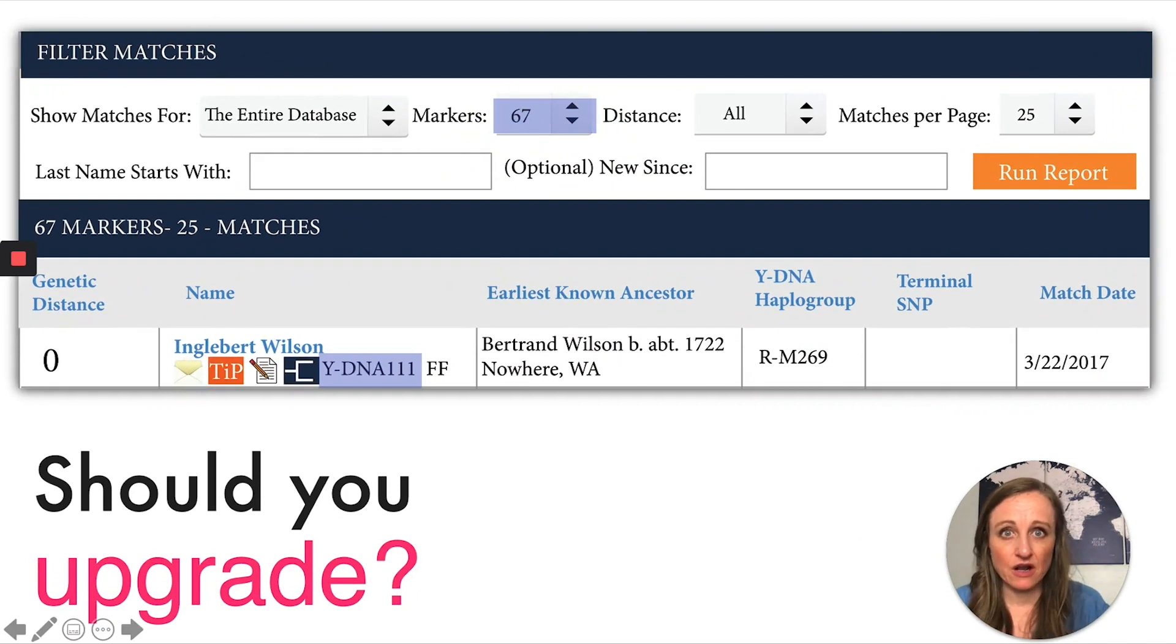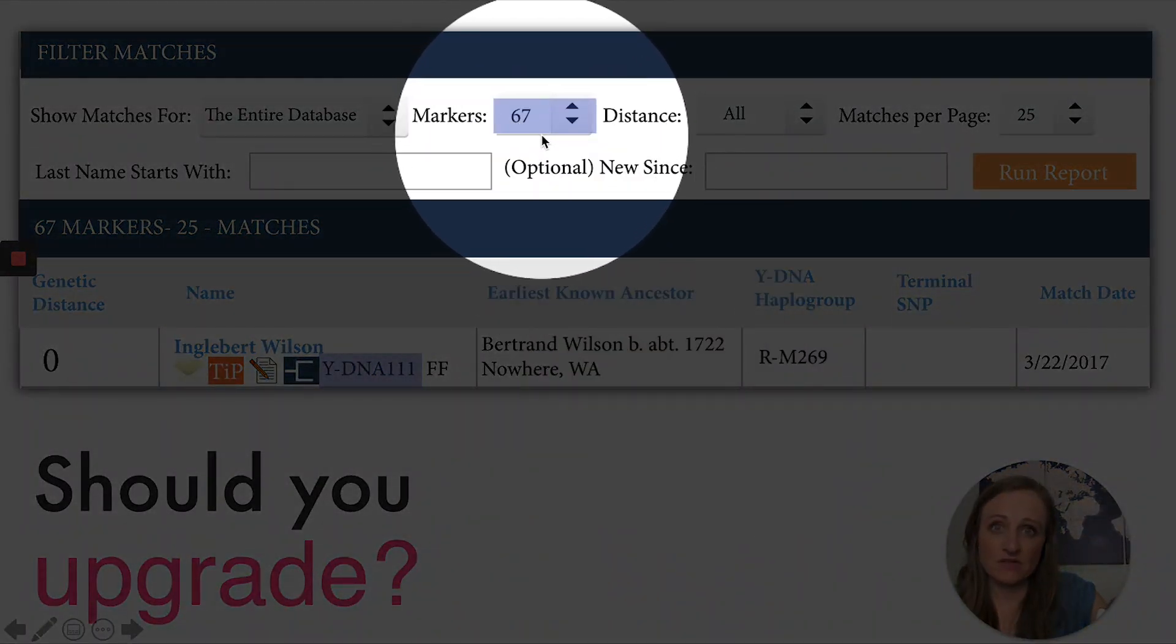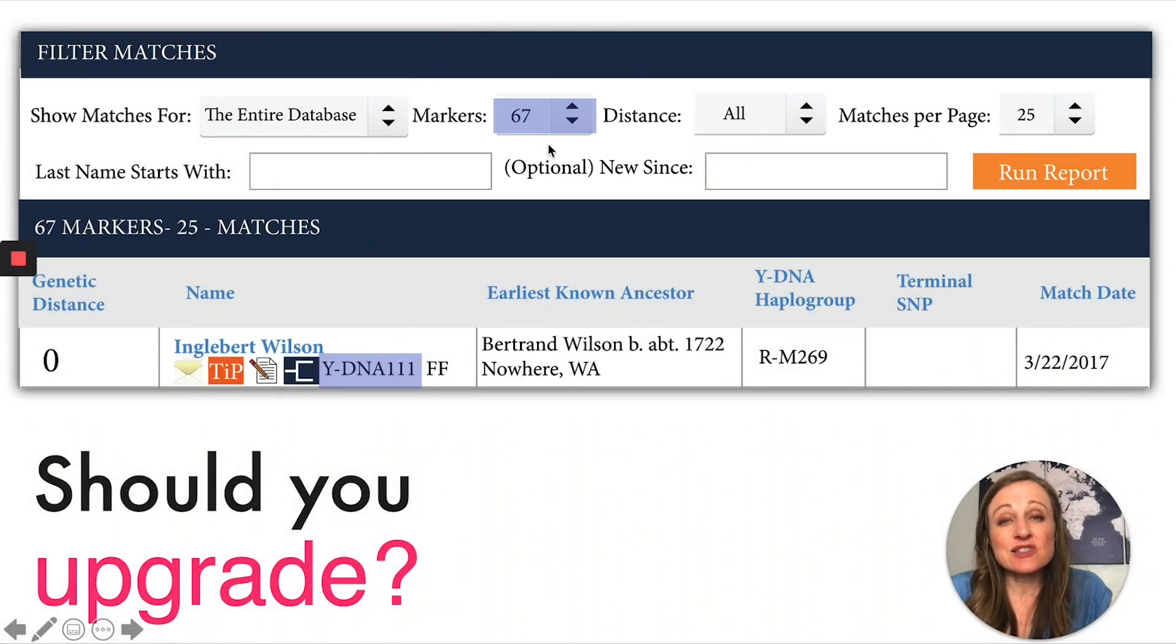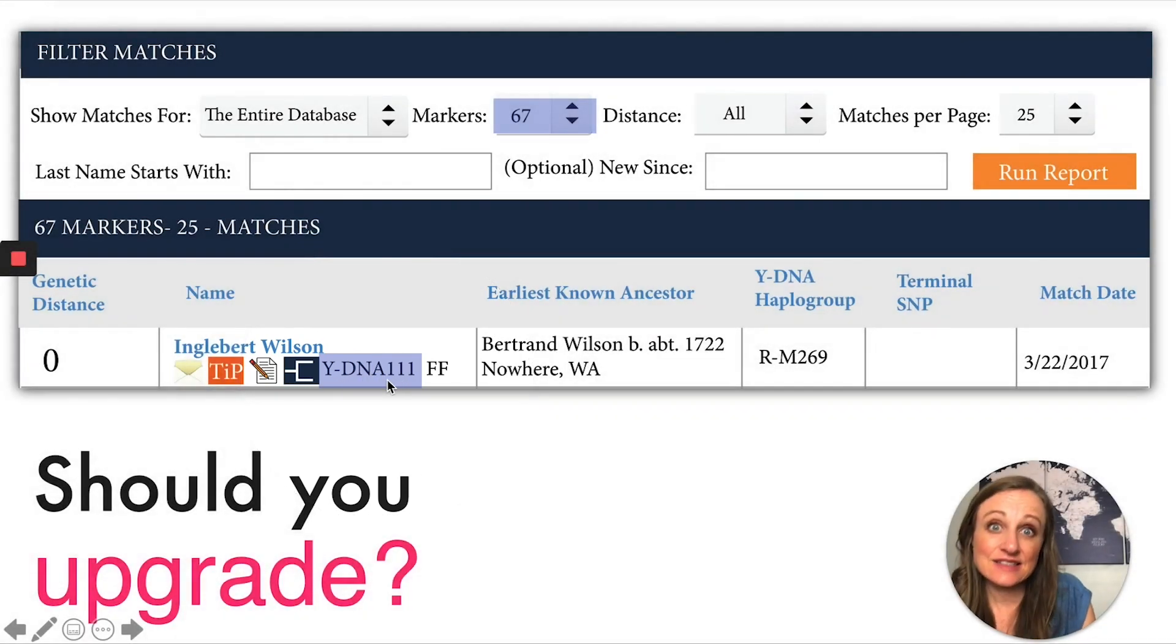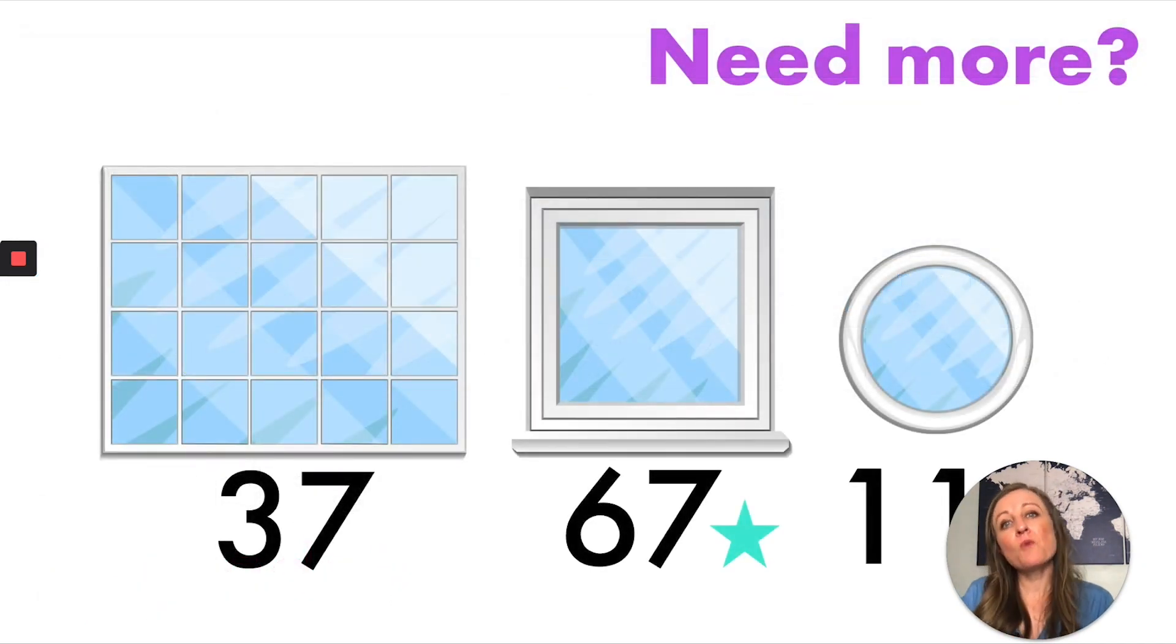In addition to the TIP calculator, I want to make sure that you're looking at a couple of other things here in the match page. So you can see at the match page right now, here at the top, we've tested at 67 total markers. So when you've tested at 67 markers, a lot of people are wondering, do I need to test at 111? Is that going to help? One thing you want to do to help you figure that out is check right here, and you can see that this match has tested at 111 markers, which means it might be valuable for you to do the same. So you can get a better comparison of how well you match at that higher level of testing. But if no one else has tested at a higher level than you have, there's no point in you testing at that higher level because there won't be anyone to compare with.